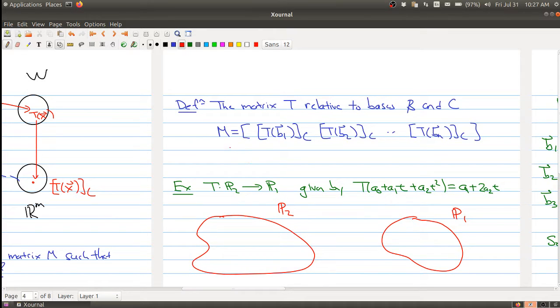So you get T(bn) with respect to C. And it's useful to note that what you're getting here is an M by N matrix. It's clear that you're getting N columns because I've written out the N columns here, and the fact that you're getting M rows is because whenever you find the C coordinate of a particular element, you're getting an element in R^m.